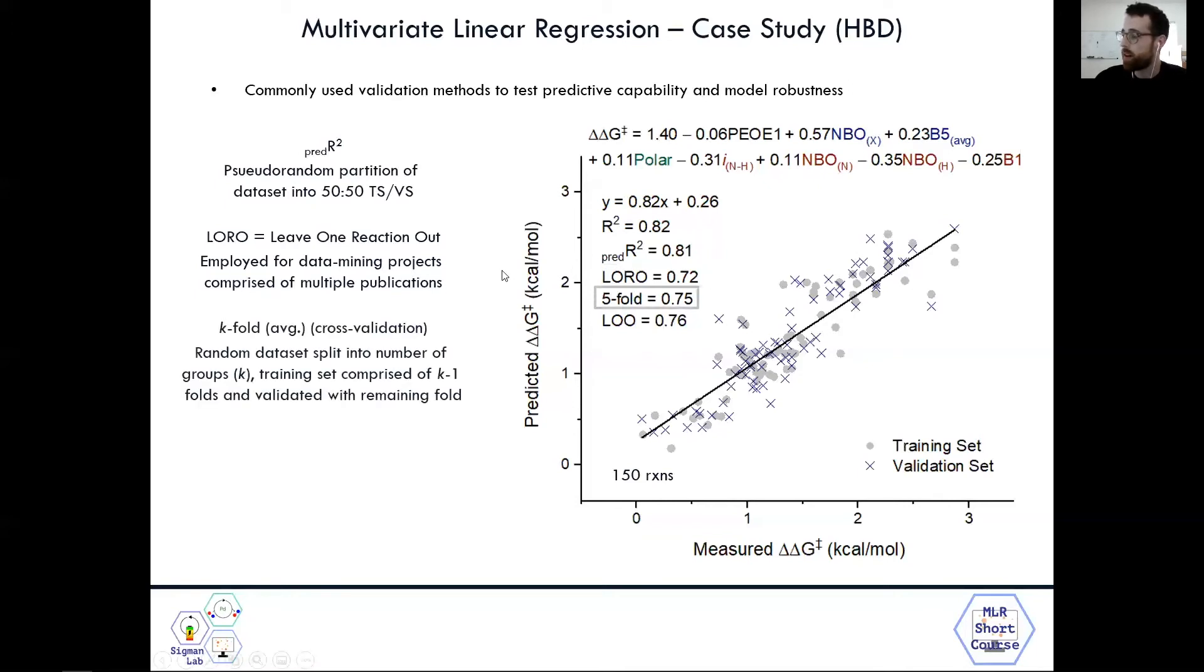Next, we can look at K-fold, which is a cross validation method. It is a random data set split into a number of groups, which is K. And then the training set is comprised of K minus one. So in this case, we have a five fold K-fold cross validation method. So we split the data set into five folds. We have, so in this K minus one, we'll have four folds that are used as the training set. And then the validation set is the remaining fold. And then this is, since this is a random data set split, we like to take an average of these typically four or five times to make sure we are getting a full representation of the data set. And it's a full representation of the different splits that are possible. In this case, we have a 0.75 score, which is considered a good score relative to our fits and our different other validation methods.